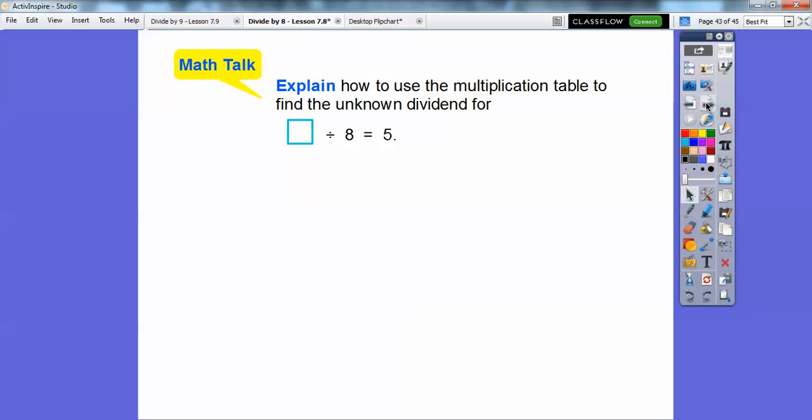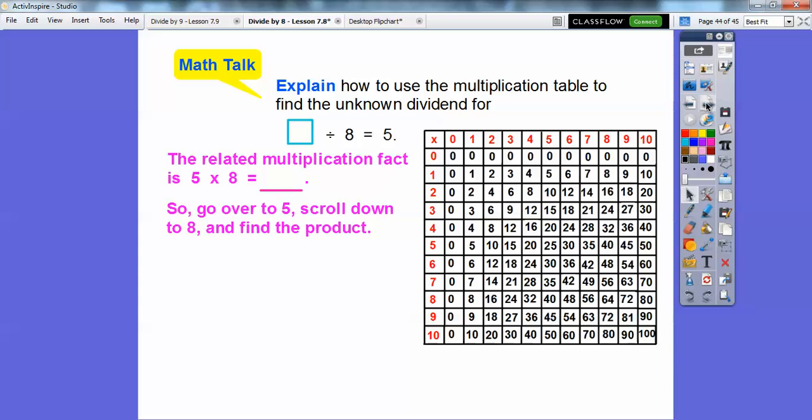So explain how to use the multiplication table to find the unknown dividend for what number divided by 8 equals 5. Well, what we can do is use the related multiplication fact. 5 times 8 equals what? And then use the multiplication table. So go over to 5. So here's 5 right here. And then go down on this column down to 8. And you can go 5 times 8 and just scroll it over and we get 40 right there. So here's 5. You guys know how to use the multiplication table? Times 8 equals 40 right there. All right, you guys. Take care.